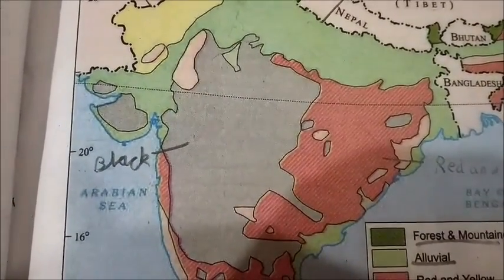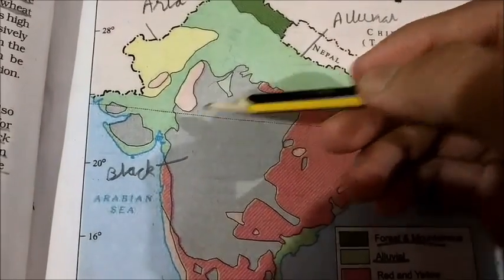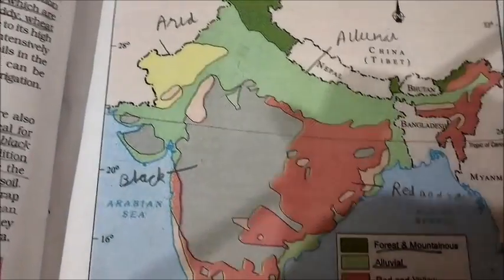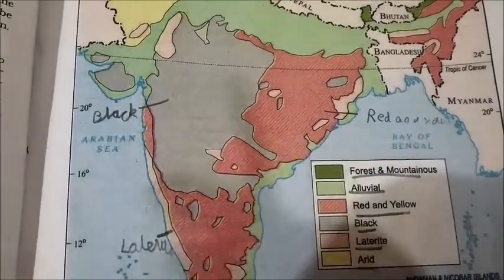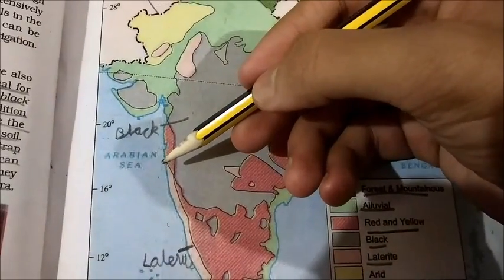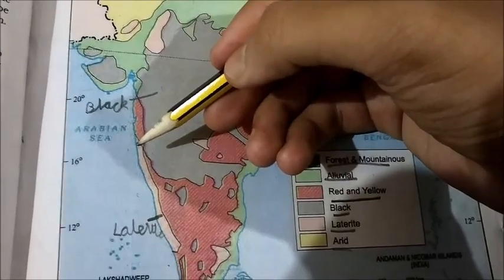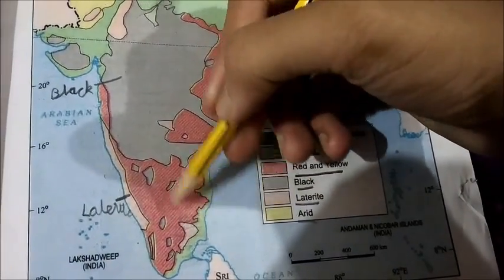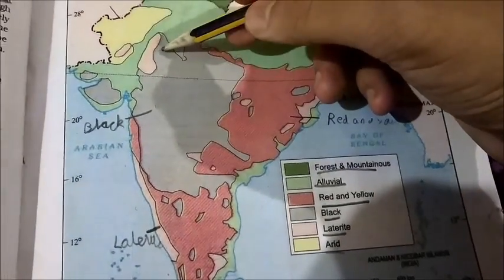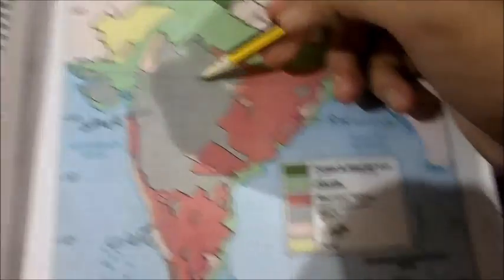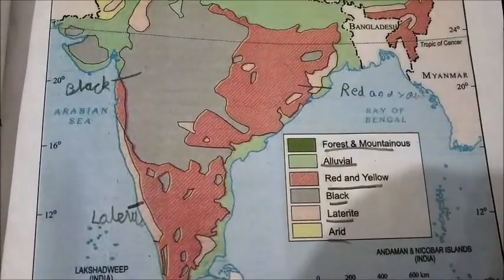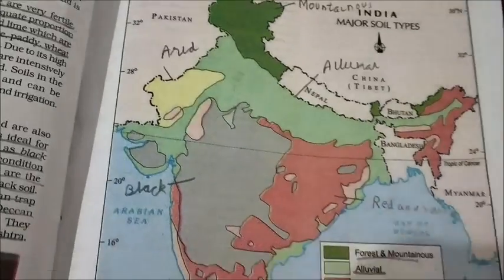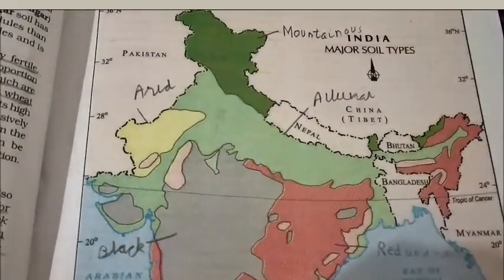Then black soil is primarily in the western belt — in states like Maharashtra, Gujarat, and Madhya Pradesh — where cotton is primarily grown. Laterite soil forms because of intense leaching and excessive heat and rain; it is primarily in the Konkan belt and also parts of Tamil Nadu, Gujarat, and Madhya Pradesh. Finally, arid soil is only in Rajasthan, in the desert region.